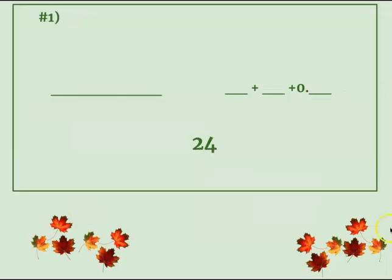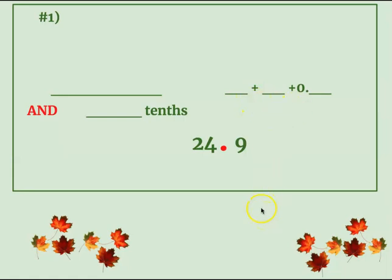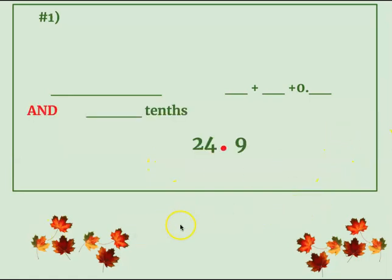We are on problem number one — the green box. Remember, anything in the green box you're responsible for writing on your paper. We have the number twenty-four and nine-tenths. Write twenty-four and nine-tenths on your paper — you don't have to draw the lines, just write it. Don't worry too much about spelling, do your best. For expanded form, drop the first number down with zeros for everything else and make sure you drop your decimal down, then pull down the four with the decimal and a zero, and pull down the nine-tenths.